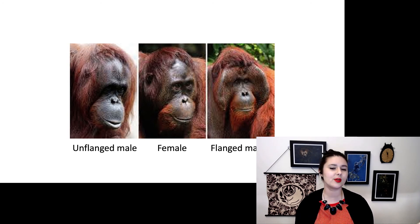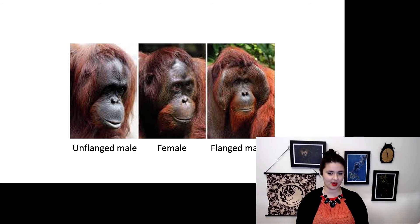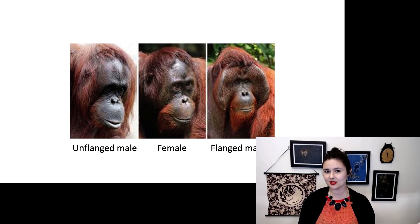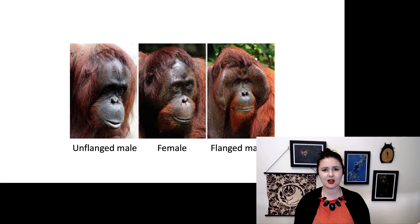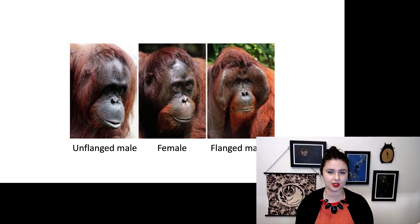So here we have an unflanged male and a female. The female is in the middle. What goes on with orangutans is that some orangutans are actually still sexually mature, but you can see they look almost exactly like the female. And they are fully able to have children. And they're an adult in every other sense, except they don't have the development of these secondary sexual characteristics.